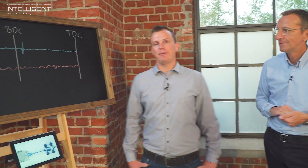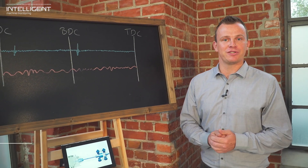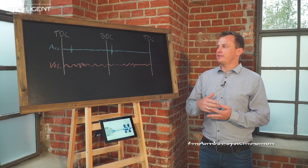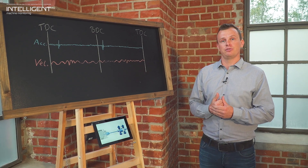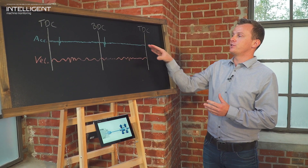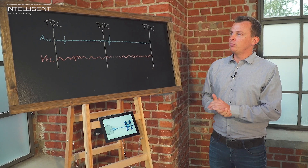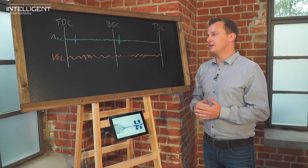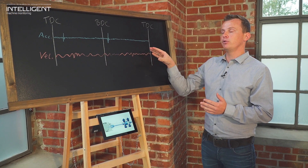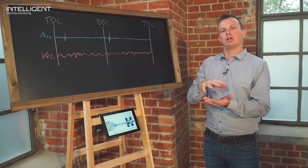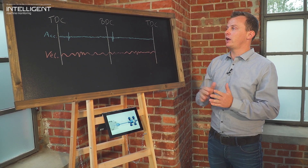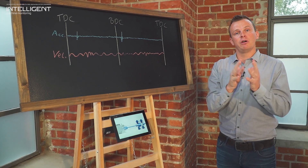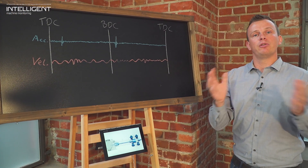Thanks for that introduction. We mainly have three vibration sensors: the acceleration sensor, the velocity sensor, and the proximity sensor. Let's exclude the proximity sensor today and focus on the acceleration and velocity signals. The main important difference is that the acceleration signal covers a much higher frequency range than the velocity signal. With a velocity probe, the frequency domain is much lower, so we cannot see the complete frequency range like we can with an acceleration sensor. On the other hand, the velocity probe is better for seeing lower frequency signals, such as on the frame.